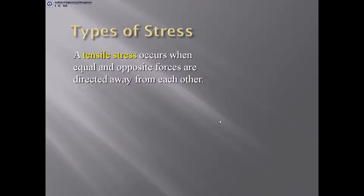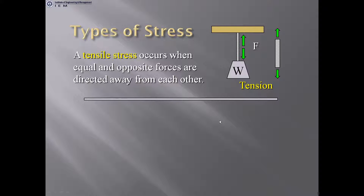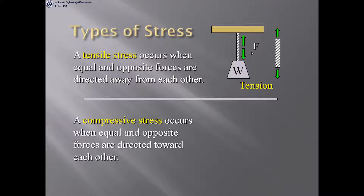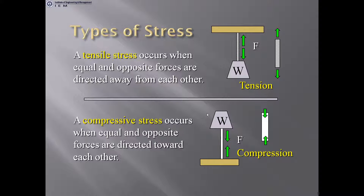Types of stress: a tensile stress occurs when equal and opposite forces are directed away from each other — tension develops. A compressive stress occurs when equal and opposite forces are directed toward each other — compression develops. The ultimate effect of tensile stress is to elongate the matter, while the ultimate effect of compressive stress is to compress the matter.